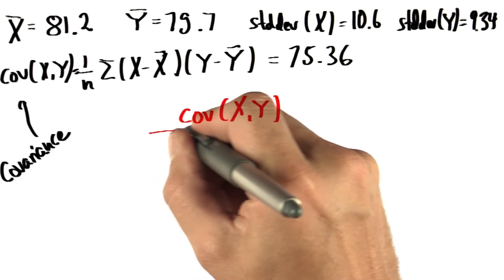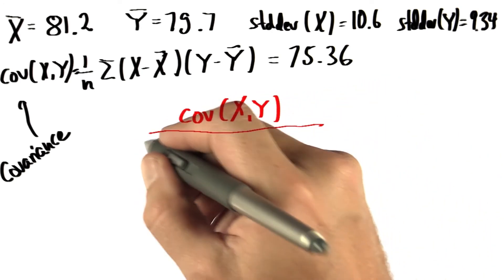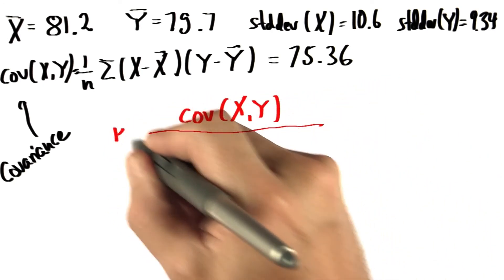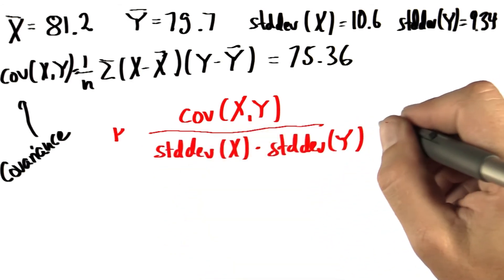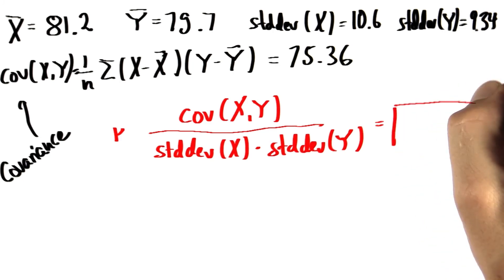Using the covariance, it is amazingly easy now to calculate the correlation r. We just divide it by the two standard deviations for x and y. So please give me that number.